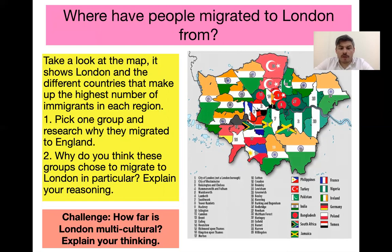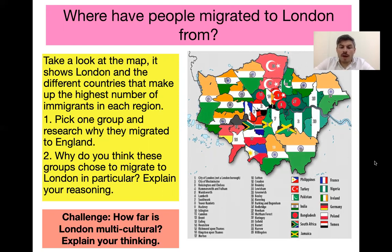I would like you to look at this map and answer a couple of questions. Pick one country represented on the map and research online why people are leaving that country — for instance, if you choose number 20, India, find out why people are leaving. Is it due to environmental, political, or social reasons? Secondly, research why people move to London — what are the pull factors bringing people to Britain and to London? Then explain your reasoning.